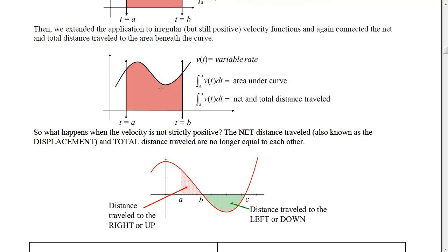So what happens when the velocity is not strictly positive? Remember, velocity tells you how you're moving, so you can move right and then left. When that happens, the velocity curve is sometimes above the x-axis and sometimes below the x-axis. When that happens, the net distance — also known as the displacement — and the total distance will no longer equal each other.